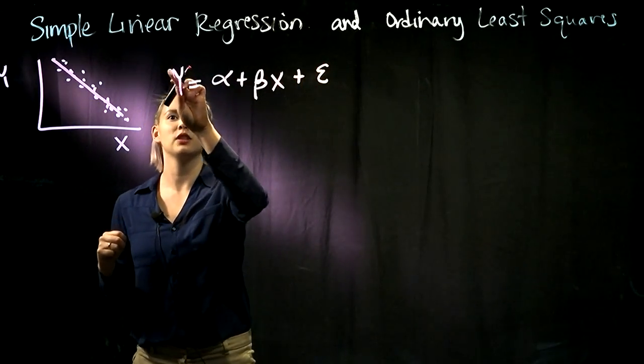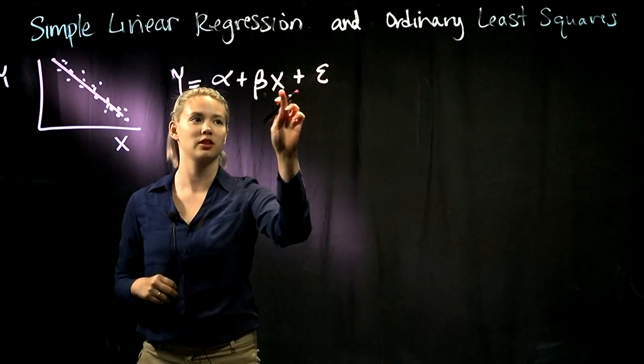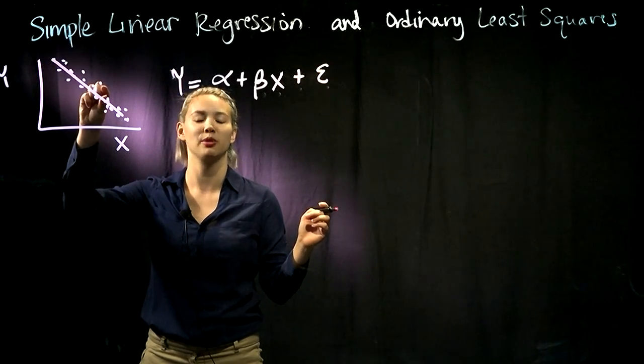So we know that each of these y's is equal to intercept plus slope times our predictor plus whatever that error term is that says how far away that data point is from the line.